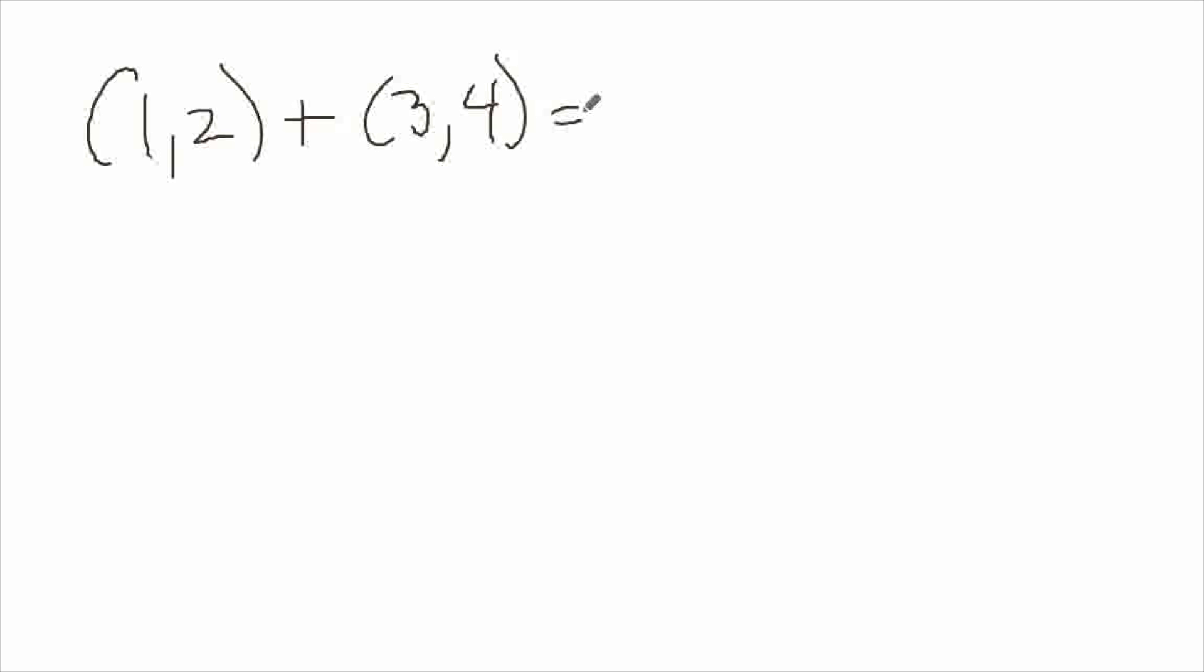And they obviously picked definitions that were useful. So I'm going to show you the definitions they chose and then try to show you why they're useful. So what they chose was you simply add the first two pieces, the corresponding components. So the 1 and the 3 and the 2 and the 4. So the sum of those vectors is the vector with components 4 and 6.